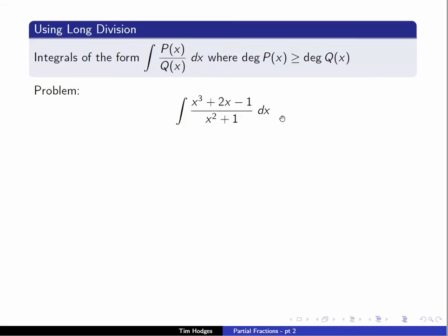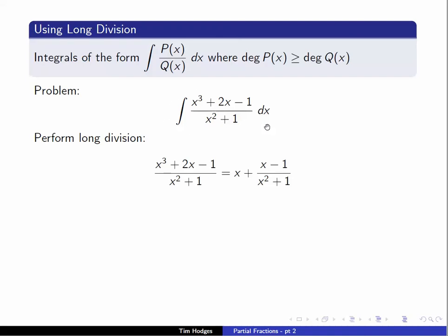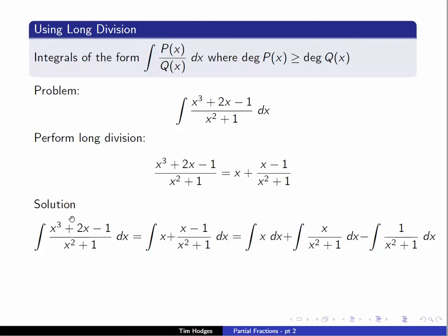Let's complete the integration of this problem. After performing long division we get x plus (x minus 1) over (x squared plus 1). Splitting the second term into x over (x squared plus 1) minus 1 over (x squared plus 1) and integrating gives a final answer of x squared over 2 plus one half log(x squared plus 1) minus arctan(x) plus c. In general the problems will be harder, but this illustrates the outline of the procedure.